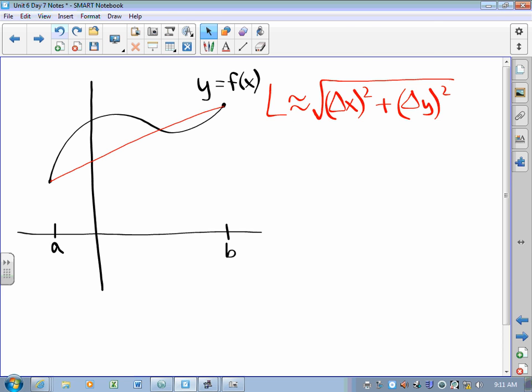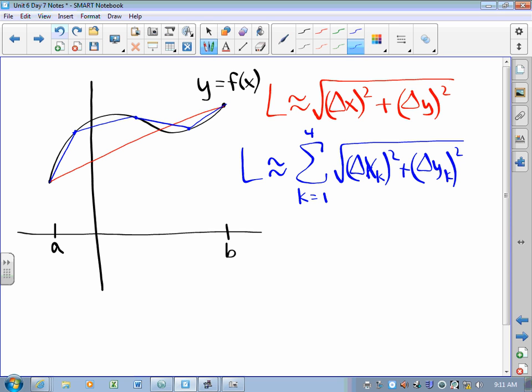Maybe I need more line segments. So maybe if we picked some demarcation points, maybe four line segments does the job. Then my arc length is approximately equal to a sum as k goes from 1 to 4 of the square root of delta x sub k squared plus delta y sub k squared. We just run Pythagorean Theorem four times, add them up. That does do a better job, generally speaking.